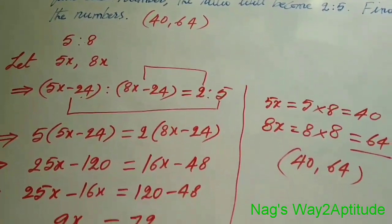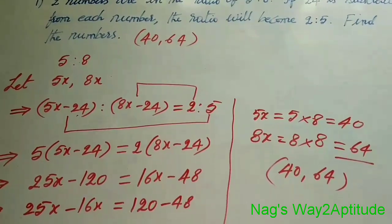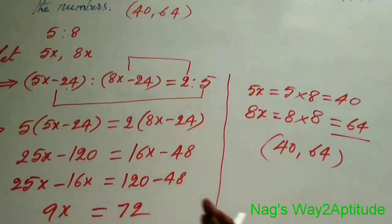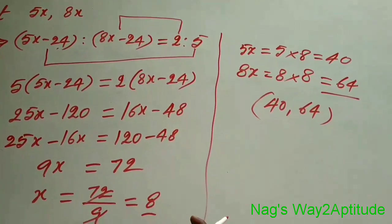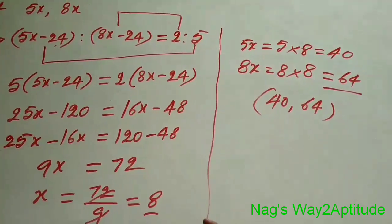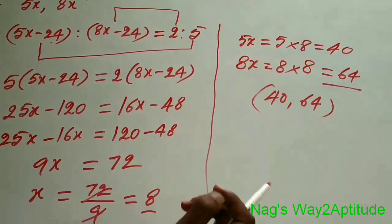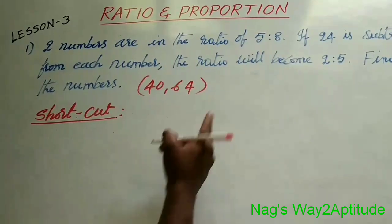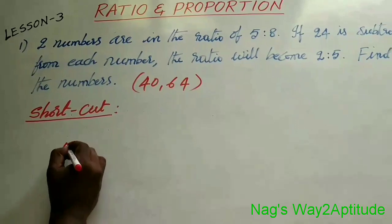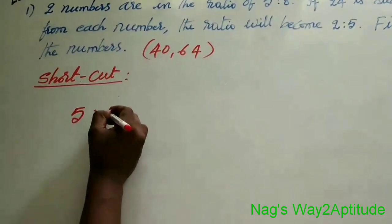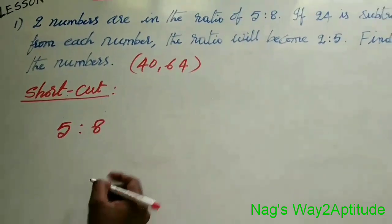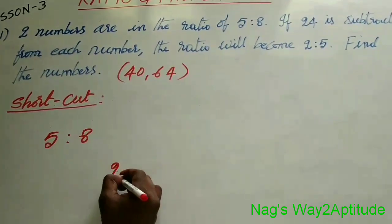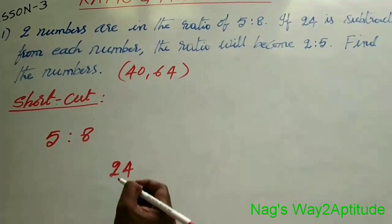But see, this is a very lengthy method. In competitive examinations, we should not follow this method because it is completely a waste of time. So now I will explain a shortcut method you can use very easily. You take the original ratio of the numbers, 5 is to 8, and write 24 here since 24 should be subtracted from each number.